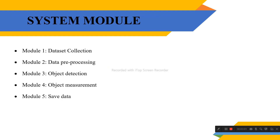System modules: Module 1 is dataset collection. Module 2 is dataset pre-processing. Module 3 is object detection. Module 4 is object measurement. Module 5 is save data.